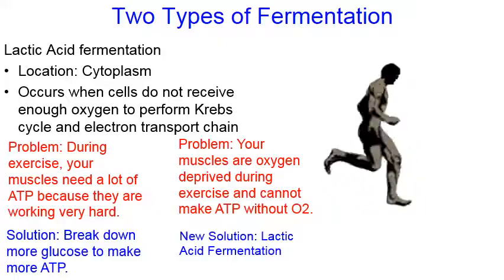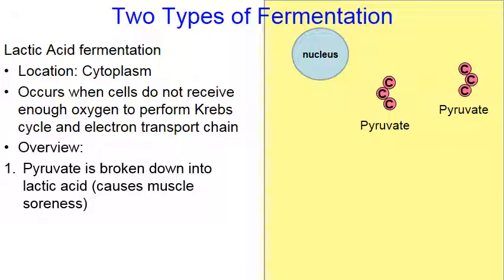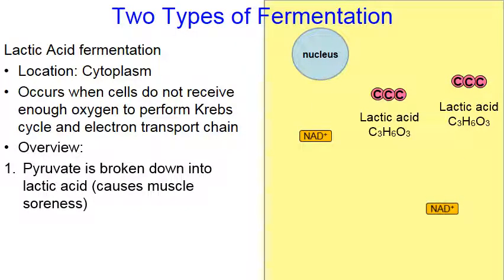Here's an overview. There are the two pyruvate molecules, meaning glycolysis must have just ended. Those pyruvates are both going to be broken down into lactic acid — this is what causes muscle soreness during physical exertion and heavy exercise. The animated scissors represent enzymes, causing the pyruvate to be broken down into lactic acid. In the process, a molecule abbreviated NAD+ is created. The other pyruvate is also broken down into lactic acid, producing another NAD+.